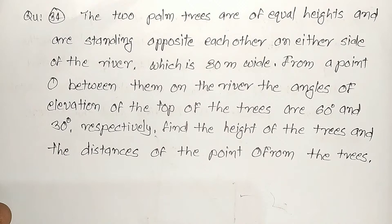The question is that two palm trees are of equal heights and are standing opposite each other on either side of the river which is 80 meters wide. From a point O between on the river.